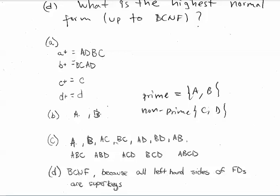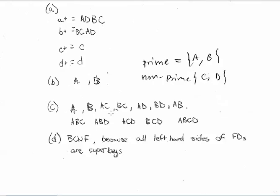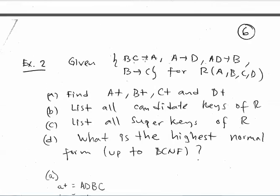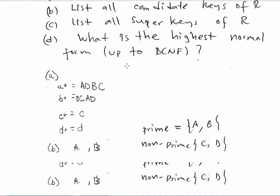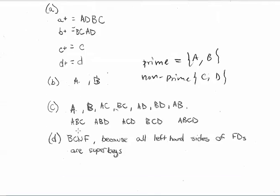Listing the super keys: any combination containing A, or any combination containing B. Now we check for BCNF by going through each functional dependency and verifying the left-hand side is a super key. BC contains B — yes, it's a super key. The next dependency's left-hand side is also a super key. A and D contains A — yes. Checking all remaining dependencies — yes, yes, yes, yes. All left-hand sides are super keys, so R is in BCNF. The answer is BCNF because all left-hand sides of the functional dependencies are super keys.